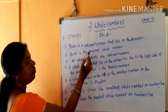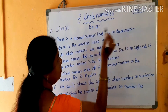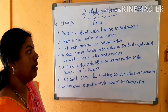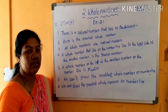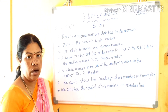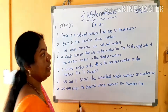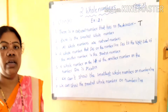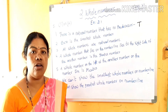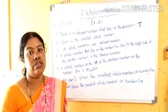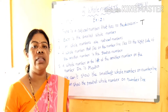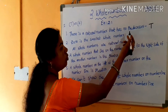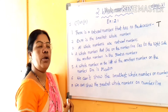There is a natural number that has no predecessor. Is it true or false? Yes, it is true. Because in the natural numbers, one has no predecessor — the predecessor of one is 0, but in natural numbers there is no 0. So there is a natural number that has no predecessor. This statement is true.